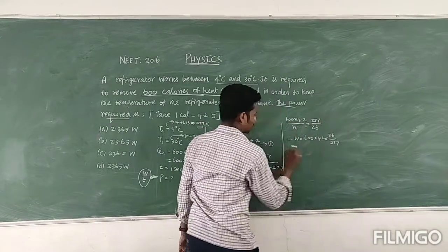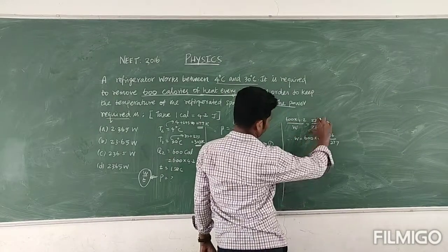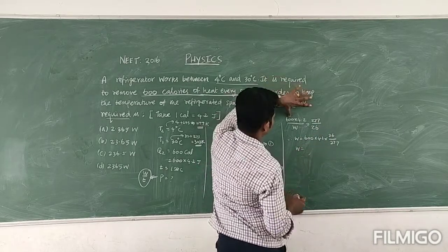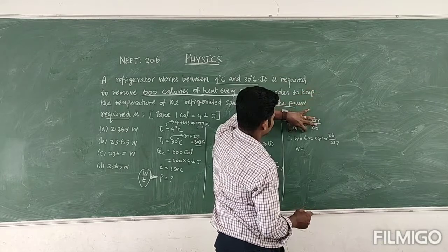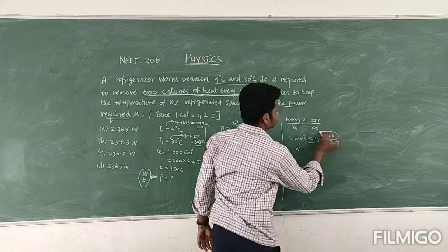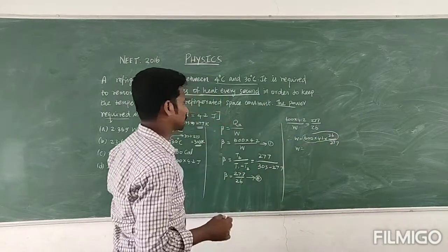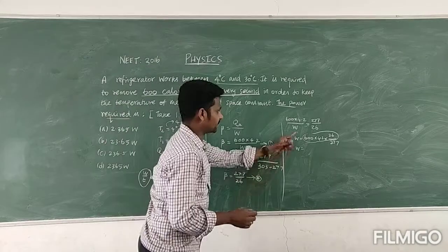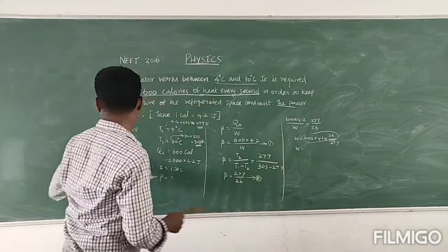So therefore the W is equal to 600 into 4.2, 277 divided by 26. So this multiplication's value.